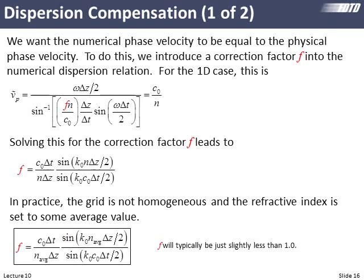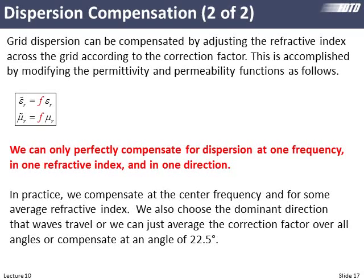Our physical wave has slowed down on our grid; we need to speed it up. Since the fudge factor is slightly less than one, we take our relative permittivity and relative permeability across the entire grid and multiply by that fudge factor, making them slightly smaller so the wave travels slightly faster. The Yee grid interaction slows the wave down; we make permittivity and permeability slightly smaller to speed it back up. If we've calculated our fudge factor correctly, those balance out and our numerical wave travels at exactly the same speed as a physical wave.